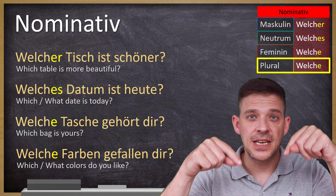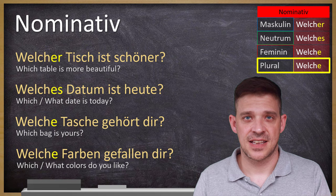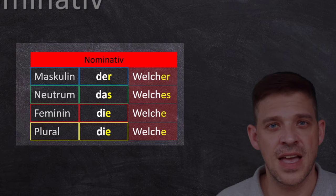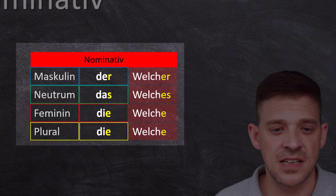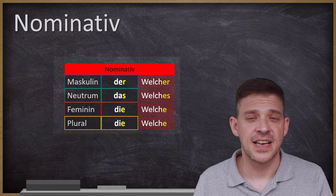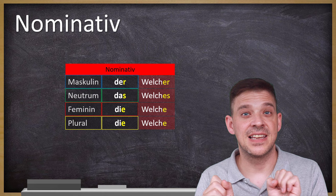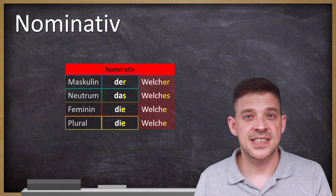Now, how to memorize those endings. You take the definite articles in Nominativ: der, die, das, die — and the endings are exactly the same for the question word welch. So der → welcher, die → welche, das → welches, die → welche. The same endings apply because welch is a pronoun that actually acts like an article — it's not der Tisch but welcher Tisch. Therefore it gets the same endings as the definite articles.